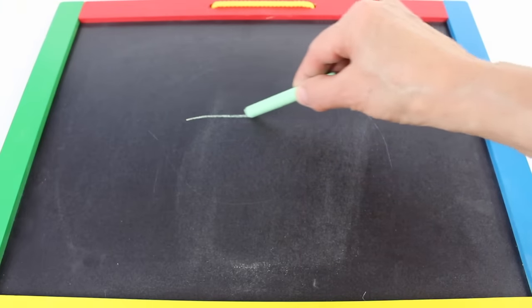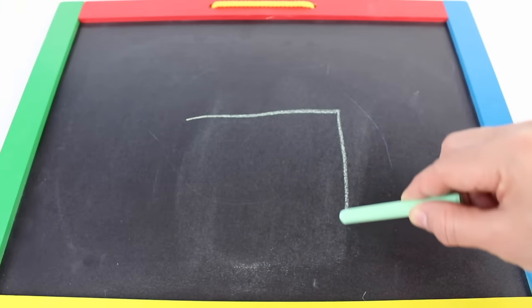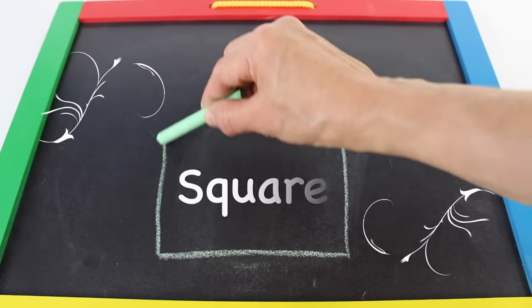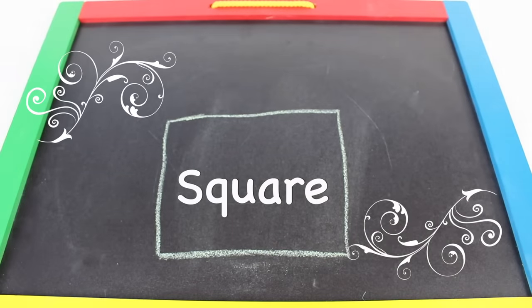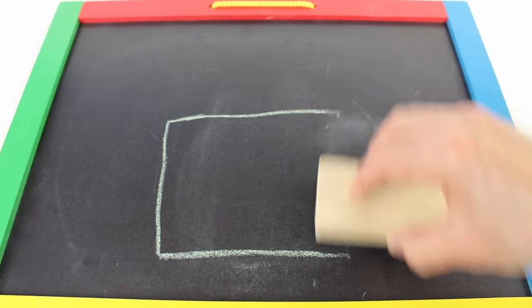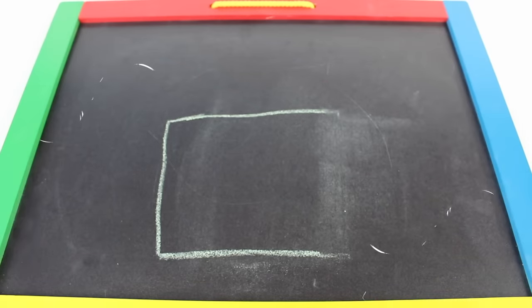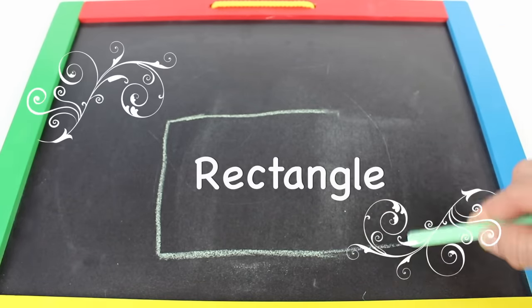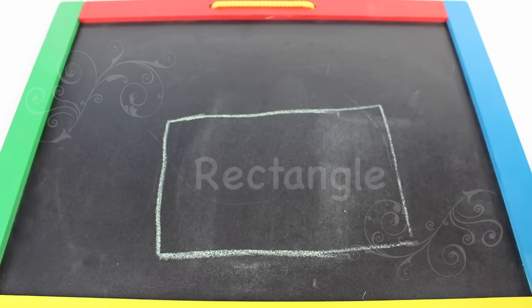Let's draw a square. A square has four equal sides. That's a square. If we take away one of the lines and make the two lines longer, that's a rectangle.